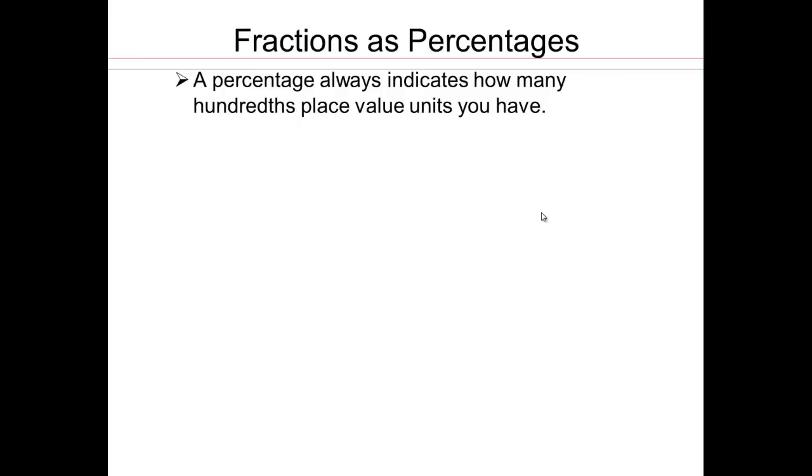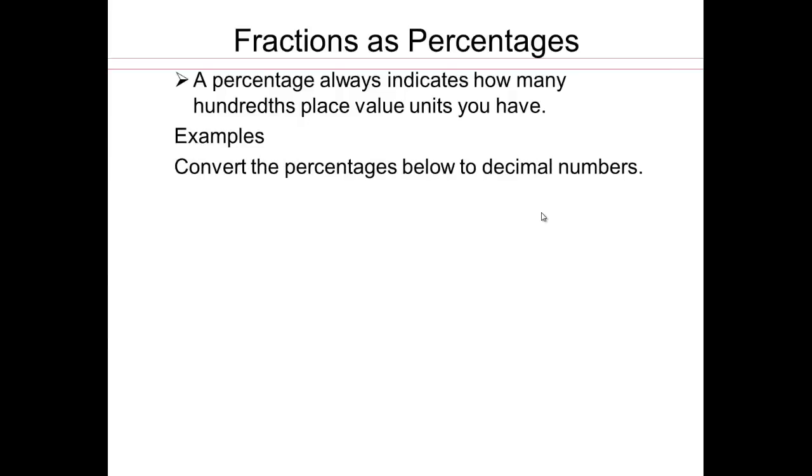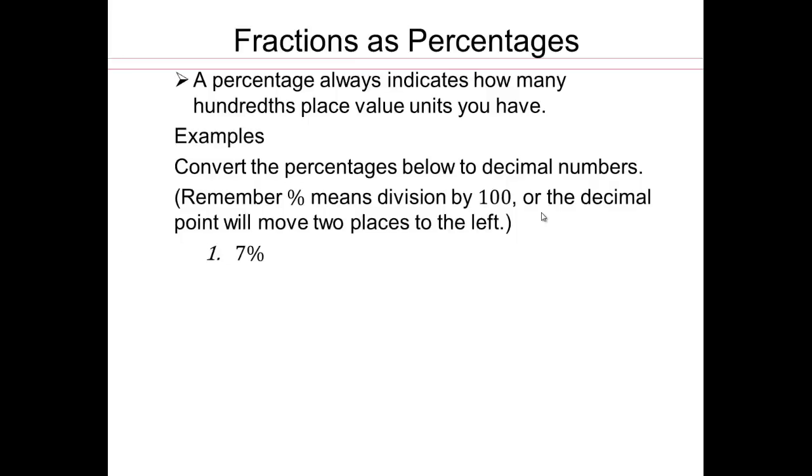You can think of a percentage always indicating how many hundredths place you have. So let's try some examples. If I say convert percentage to a decimal number, remember percentage means divide by 100. Division by 100 means you're going to move the decimal two places to the left. So you have 1, 2. So the decimal point is here.